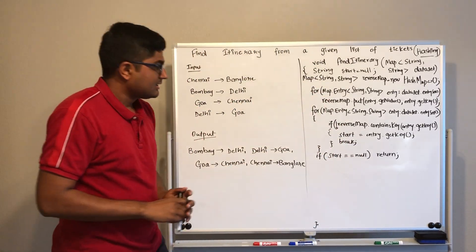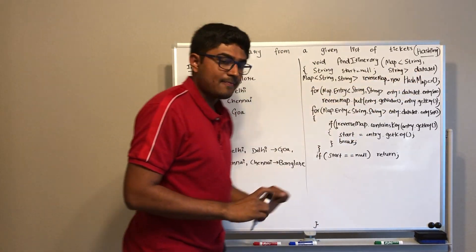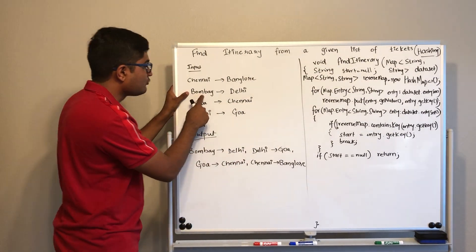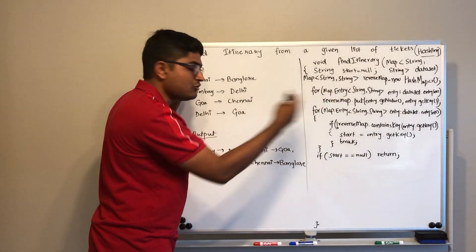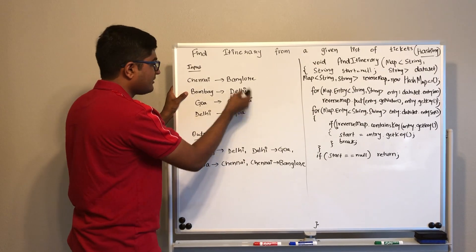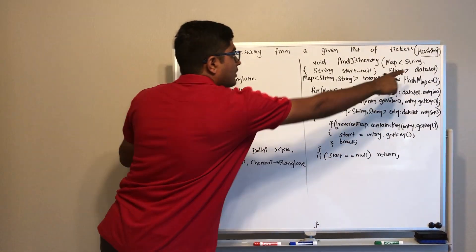we will iterate through this map again. Let's say we have this boundary. We will find Delhi, that is the value of that particular key, and we will iterate over this map till it's null.